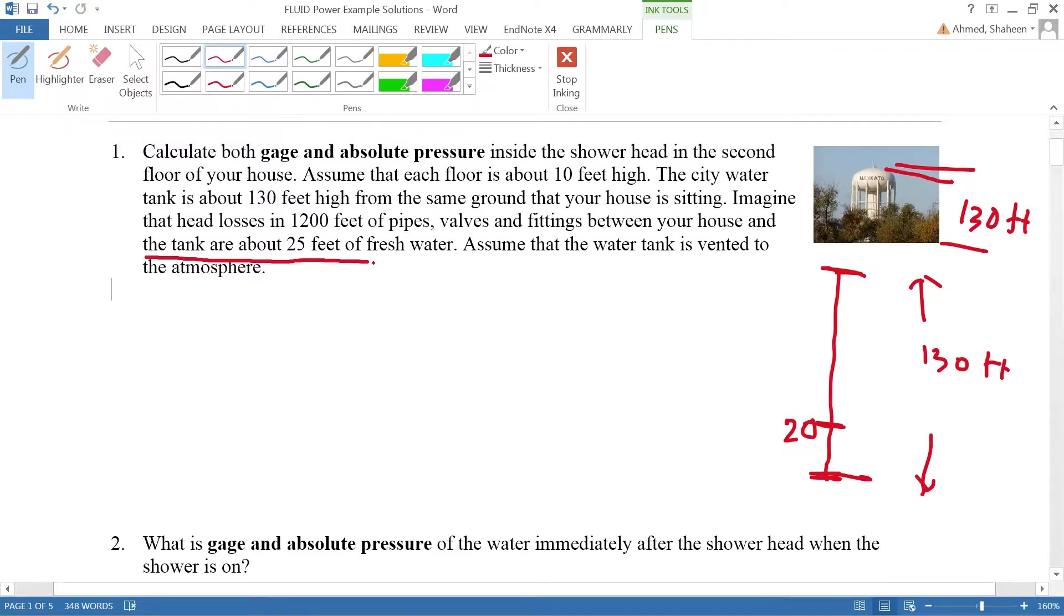valves, and fittings that have a loss of 20 feet of water. The total pressure head is the water at 130 feet minus the second floor height minus this loss. The total available head is 85 feet. Now to calculate the pressure,